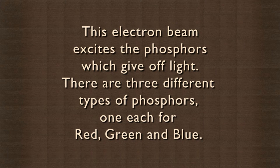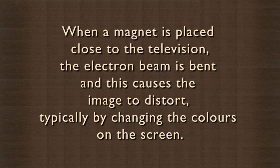one each for red, green and blue. When a magnet is placed close to the television, the electron beam is bent and this causes the image to distort, typically by changing the colors on the screen.